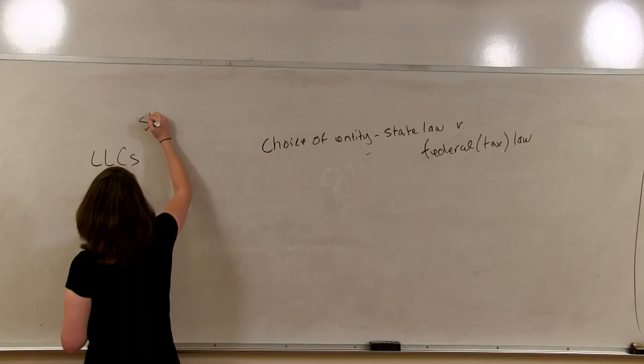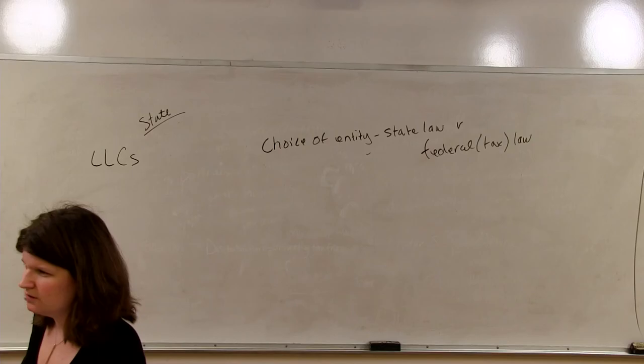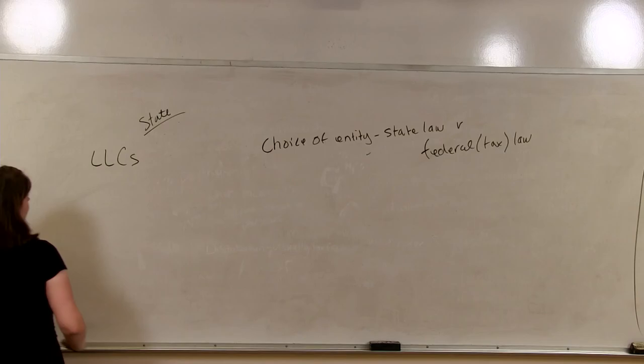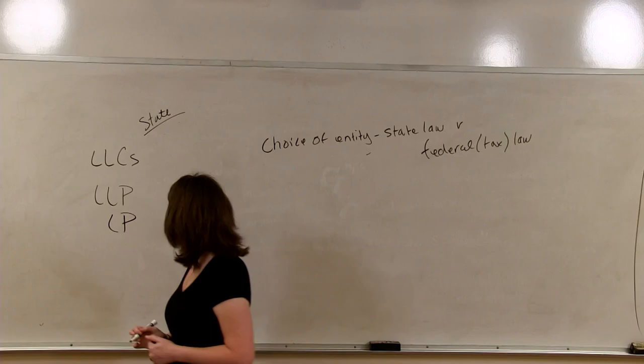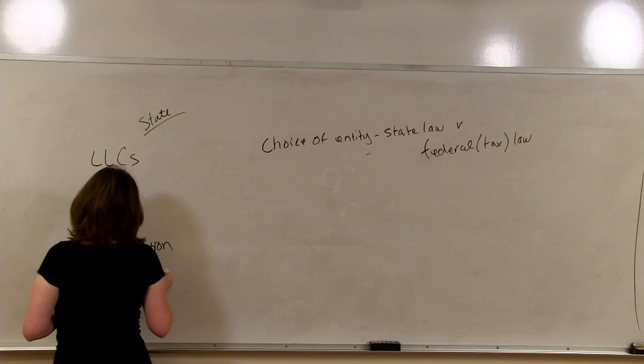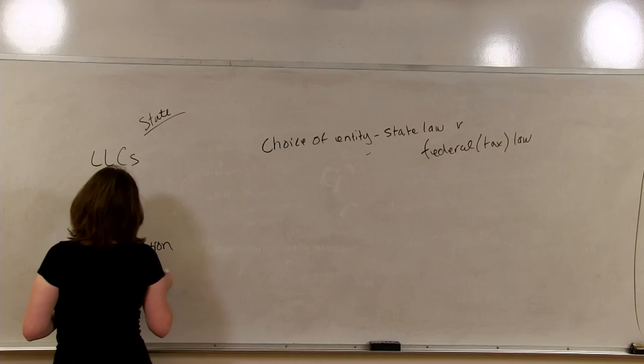So, when you hear about choice of entity, almost always people are talking about state law. What are the different entity options to create under state law? When you create an entity under state law, you file the required forms with the Secretary of State with whatever state you're in. Some of the options under state law, we have LLCs, limited liability companies. You can have limited liability partnerships. You can have limited partnerships. You can have a corporation. You could basically have a general partnership. Now, a general partnership is not actually an entity at all under state law. You're not actually creating anything.